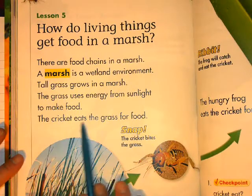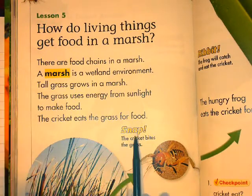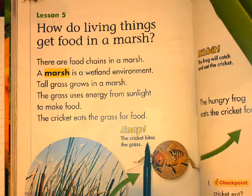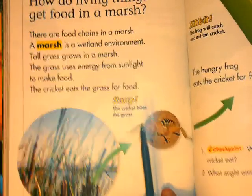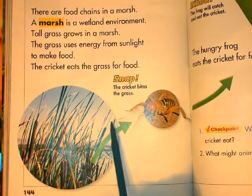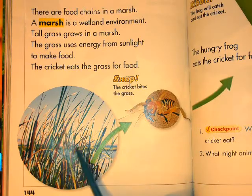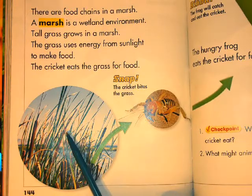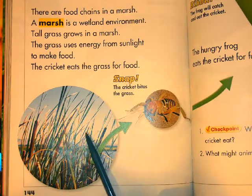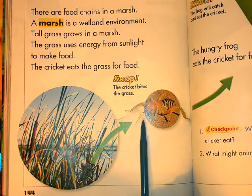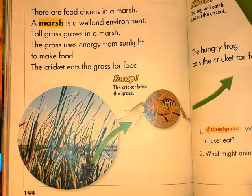The cricket eats the grass for food. The cricket bites the grass. So the food chain starts with the tall grass. The tall grass gets its energy and food from the sun. Then the cricket eats the grass. What do you think is going to eat the cricket? Let's see who's on the next page.